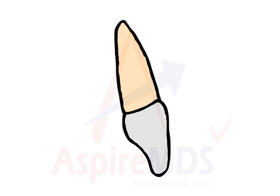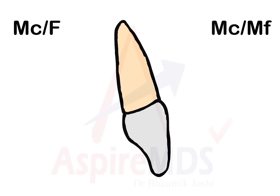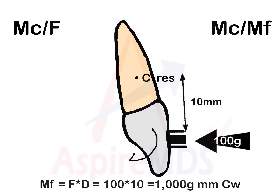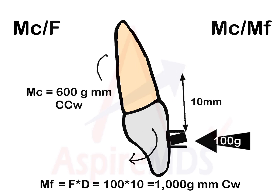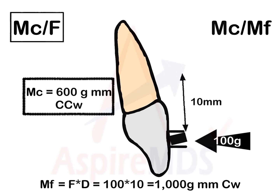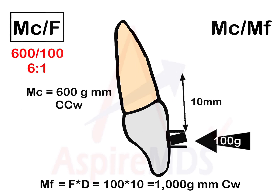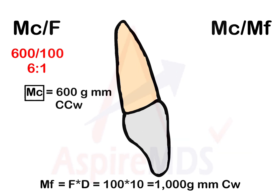There are two ratios you need to remember: one is moment to force ratio and second is moment of couple to moment of force ratio. For example, if the force applied is 100 grams at 10 millimeters from the center of resistance, the moment of force generated is 1000 gram-millimeters clockwise. If a counterclockwise couple of 600 gram-millimeters is introduced, the moment to force ratio would be 600 divided by 100, that is 6:1, and the ratio of moment of couple to moment of force would be 600 divided by 1000, that is 0.6.